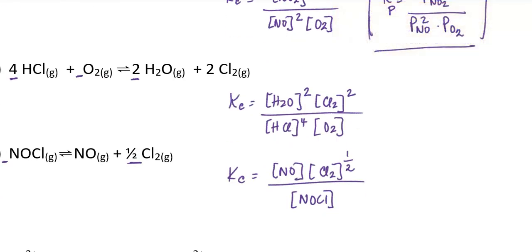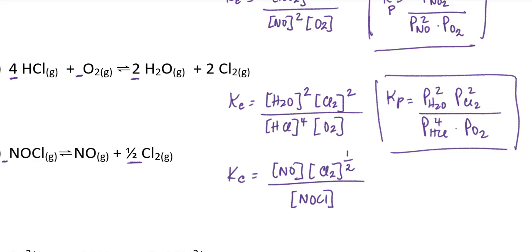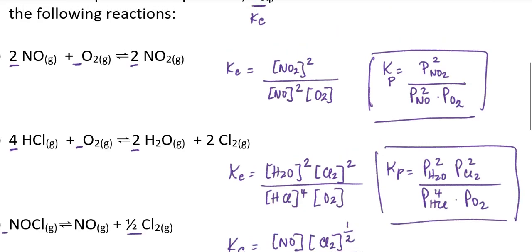Similarly, I can write Kp for reaction B. That would be the partial pressure of water vapor squared times the partial pressure of chlorine gas squared, divided by the partial pressure of hydrogen chloride to the fourth power multiplied by the partial pressure of oxygen. Kp and Kc take a similar form, but they are not always equivalent values — sometimes they are equal and sometimes they are not, depending on the reaction in question.